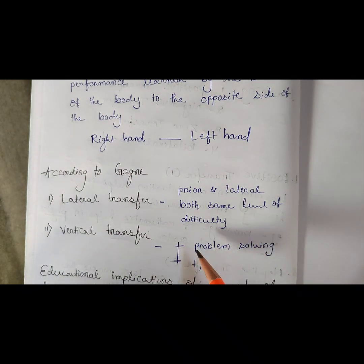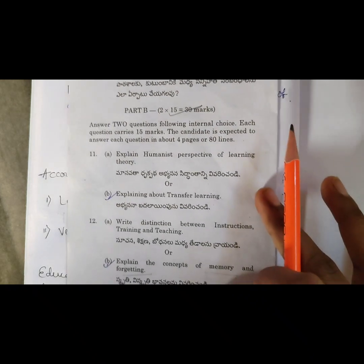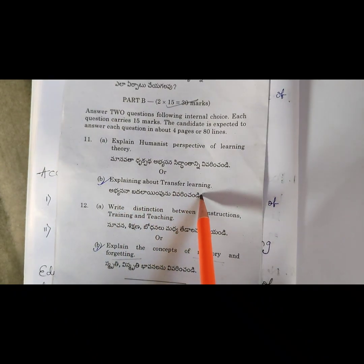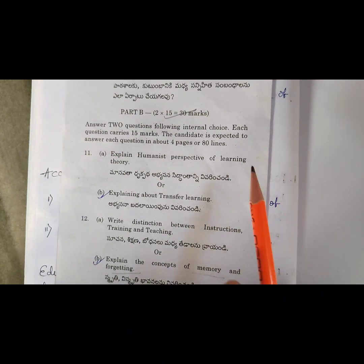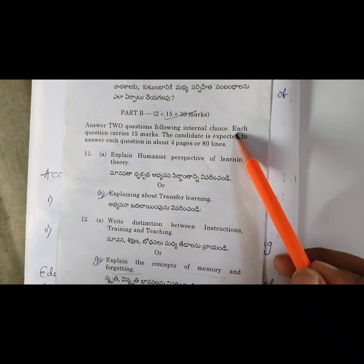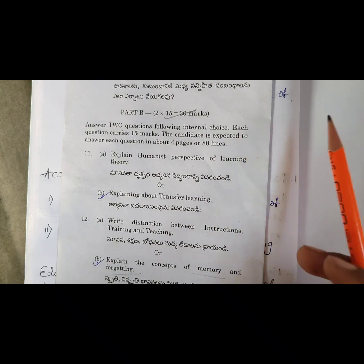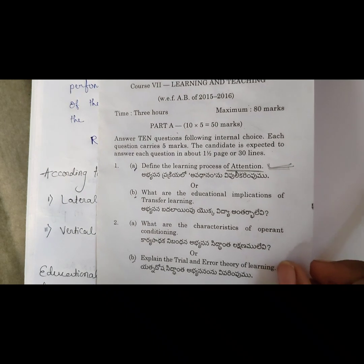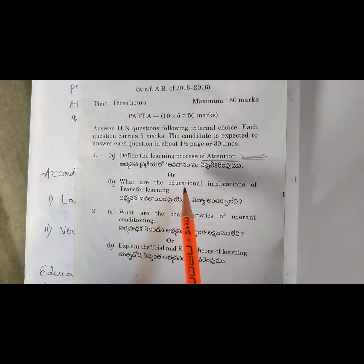There are two more types. I am including this extra information because if a 15-mark question is asked — as you can see in the question paper — you need to write about four pages. For a 5-mark question, the topic might be the educational implications of transfer of learning.